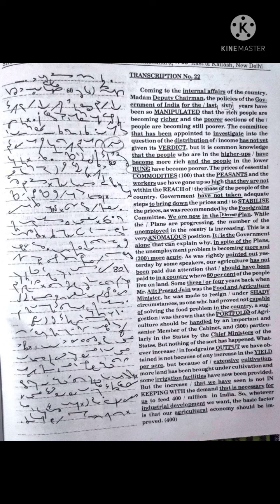Whatever increase in food grains output we have obtained is not because of any increase in the yield per acre, but because of extensive cultivation. More land has been brought under cultivation and some irrigation facilities have now been provided. But the increase that we have seen is not in keeping with the demand that is necessary for us to feed 400 million in India.